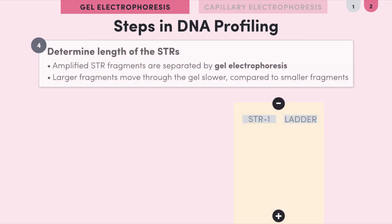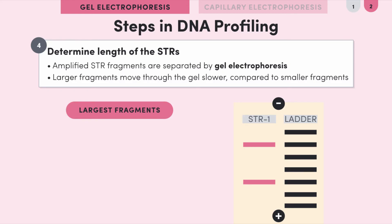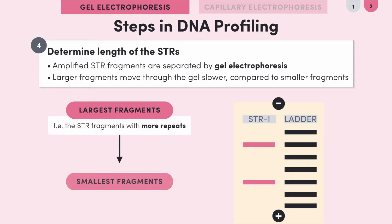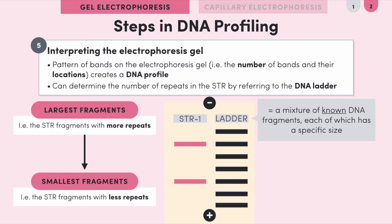The amplified fragments are then separated by gel electrophoresis — we look at gel electrophoresis in depth in another video. For now, keep in mind that we use it to separate the fragments according to their size. The larger fragments — those with more repeats — stay near the wells, while the smaller fragments — those with fewer repeats — migrate through the gel faster and further. The resulting pattern of bands on the electrophoresis gel creates a unique DNA profile, and by comparing to a DNA ladder we can determine how many repeats there are.